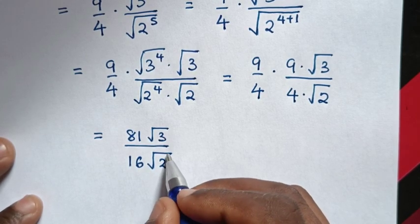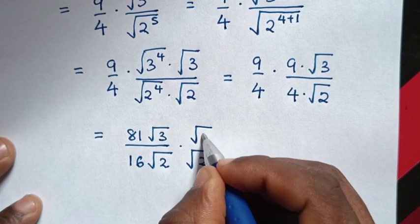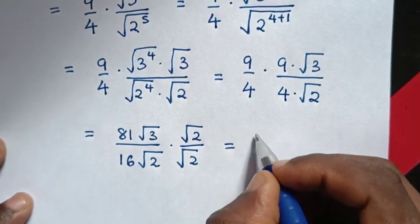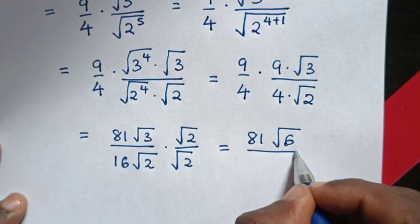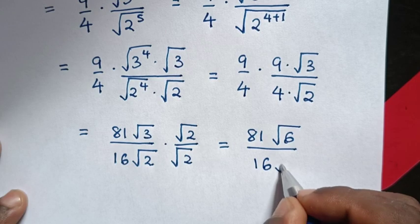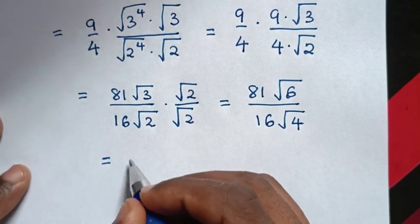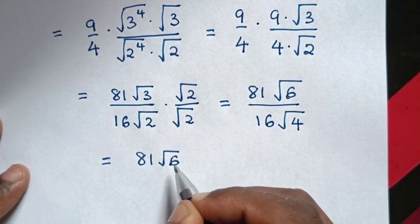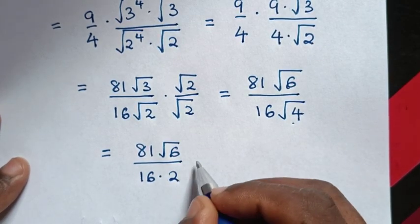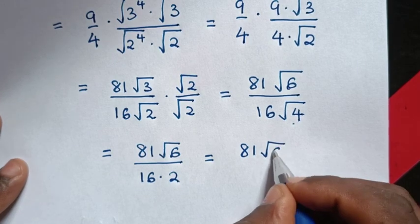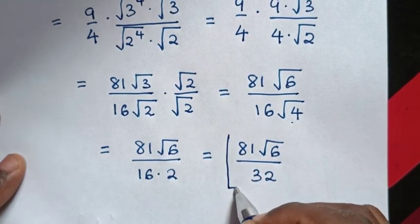Then we rationalize the denominator by multiplying by square root of 2 in the numerator and denominator. It will be equal to 81, square root of 3 times square root of 2 is square root of 6, over 16, square root of 2 times square root of 2 is 2. So it will be 81 square root of 6, over 16 times 2 is 32. So this is our final answer.